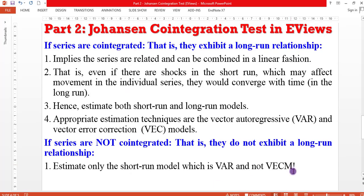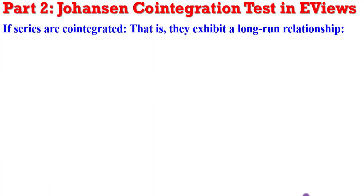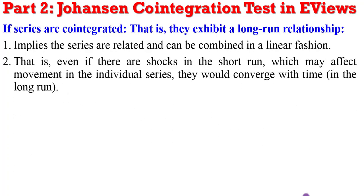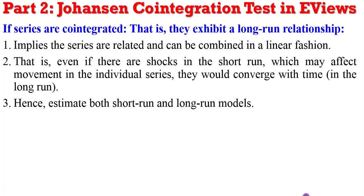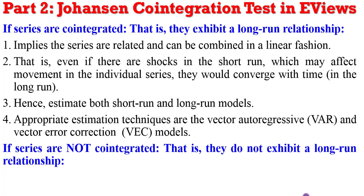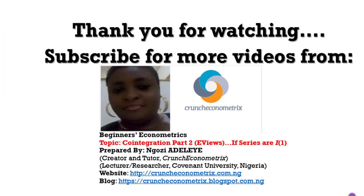To wrap up: when you find co-integration, it implies a long-run relationship exists between or among the variables and they can be combined in a linear fashion. Short-run shocks may affect individual series movements, but there will be long-run convergence. In this case, estimate both the short-run and long-run model — that is, both the VAR and the Vector Error Correction Model (VECM). If the series are not co-integrated, only estimate the short-run VAR model. Thank you for watching. Subscribe for more videos from Crunchy Econometrics, and stay tuned for part 3, where we look at series integrated of different orders.